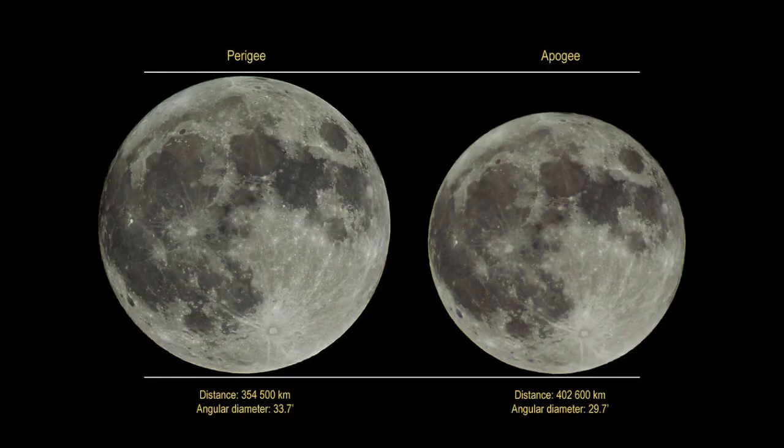Those distances were averages — the Earth's and the moon's orbits are not completely circular, leading to distance variations. At its closest point to Earth, known as perigee, the moon is only about 226,000 miles away and appears slightly larger in the sky. While at its furthest point, known as apogee, about 250,000 miles away, it appears slightly smaller.